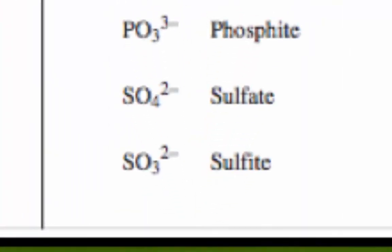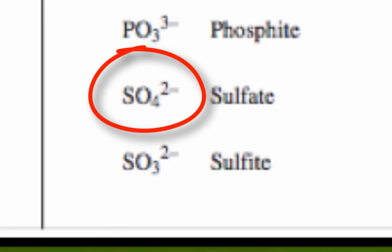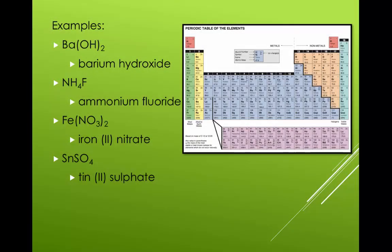Looking at sulfate on your table, you will note that it does not have a charge of minus 1. Rather, it has a charge of negative 2. It's been reduced. If sulfate is supposed to be negative 2, that means tin must have been a positive 2 charge and it was reduced as well to 1. The name of the compound is tin 2 sulfate.